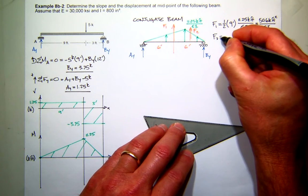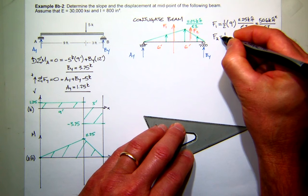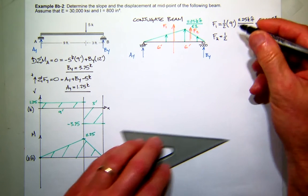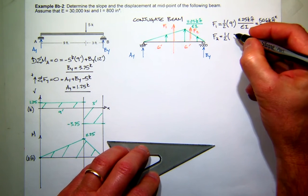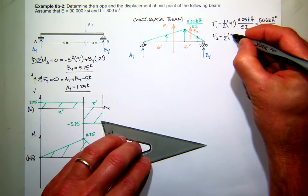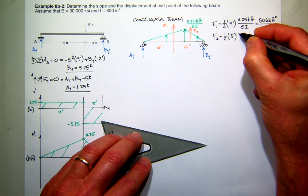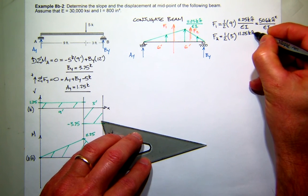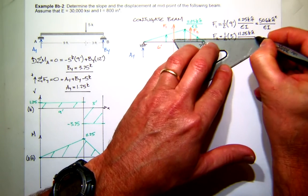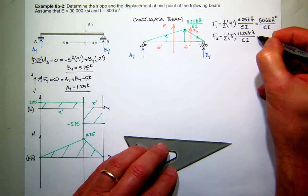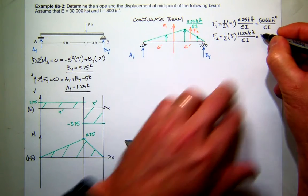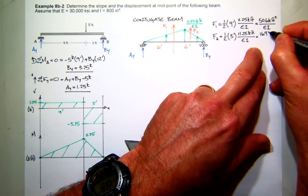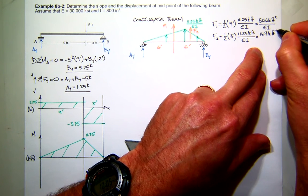What's force 2? 16.9. So that's 1 half, the base is 3 feet, times again 11.25 kip feet divided by EI. So what was that number? 16.9. Anybody else getting this number? Yes.